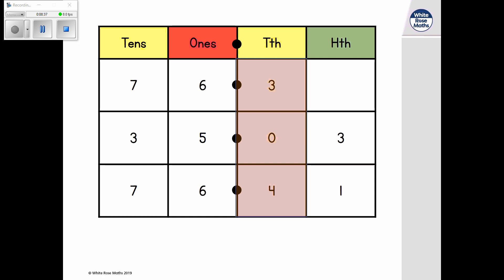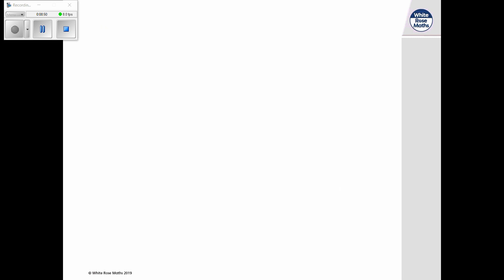In order, our numbers are 35.03, 76.3 and 76.41. To put a series of numbers in order, we continue to use this comparison between each place value column.